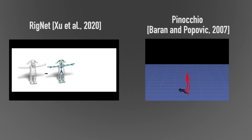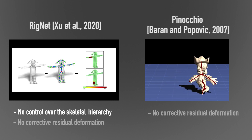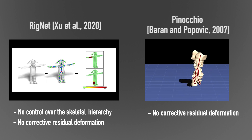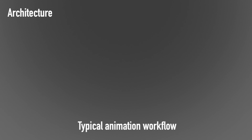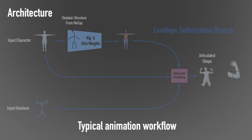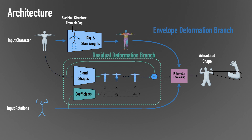Existing techniques do not provide control over the skeletal hierarchy, and do not incorporate the corrective pose-dependent shapes, resulting in undesirable deformation artifacts. Our architecture is inspired by the typical animation workflow and contains two main branches: an envelope deformation branch that learns to rig and skin the character with the mocap skeletal structure, and a residual deformation branch that learns a set of pose-dependent residual displacements.